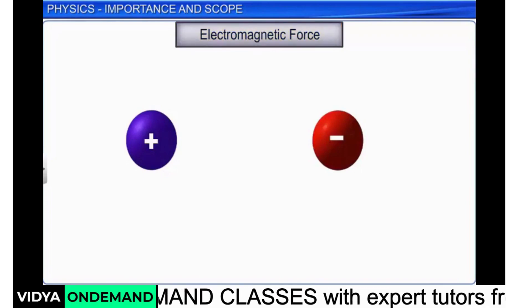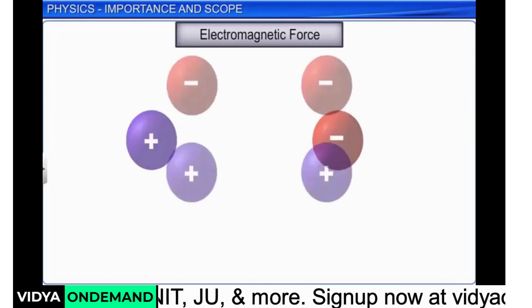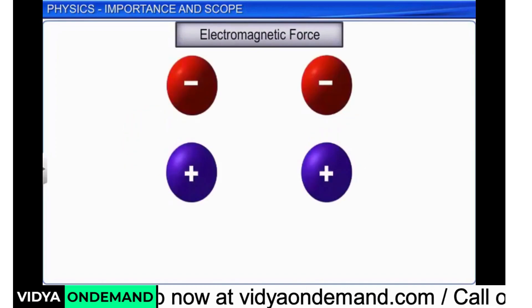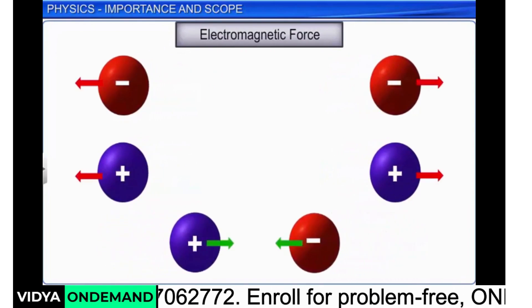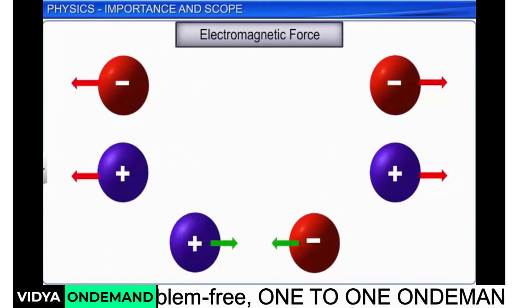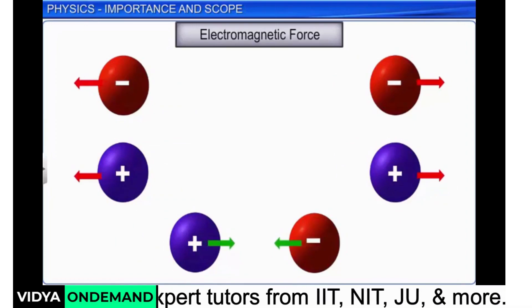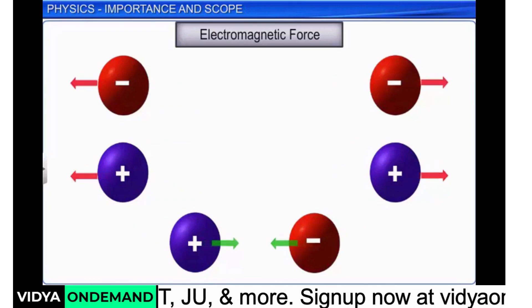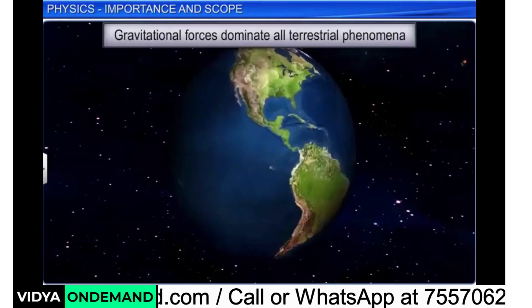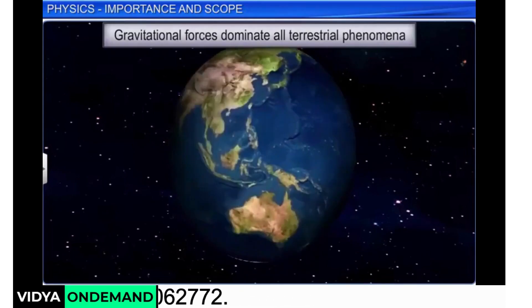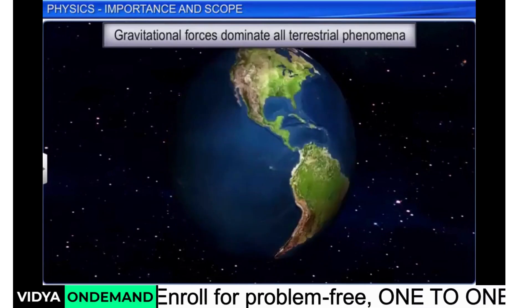Electromagnetic force is the force between two charged particles. Like charged particles repel each other and unlike charged particles attract. Like gravitational force, electromagnetic force is also universal and can act over very large distances. We do not usually encounter this force on Earth as most of the matter around us is electrically neutral.